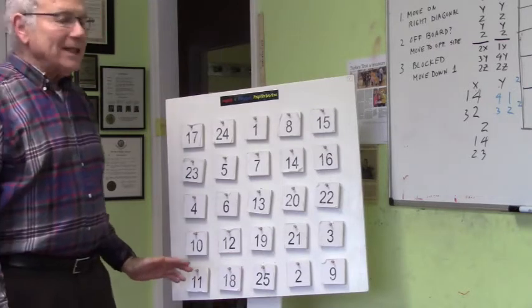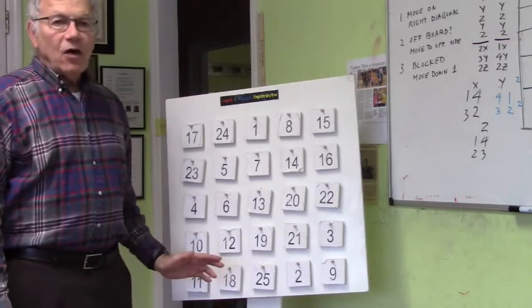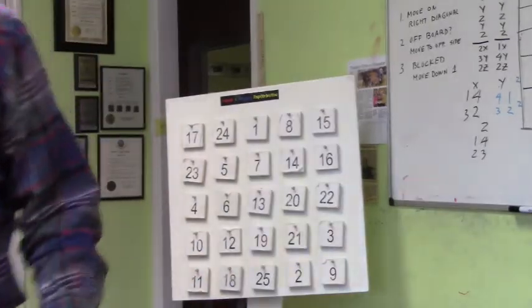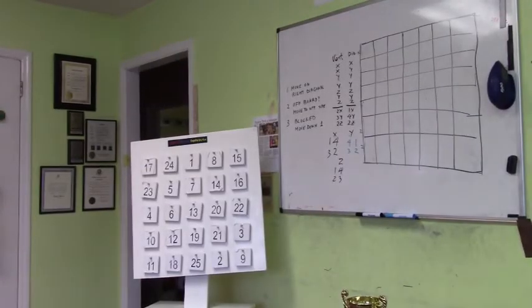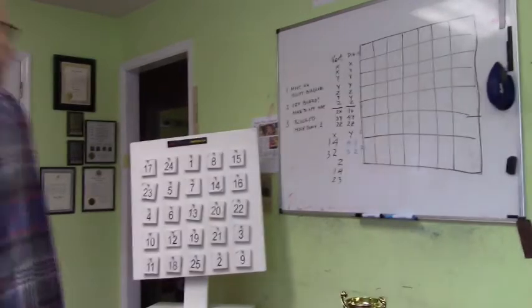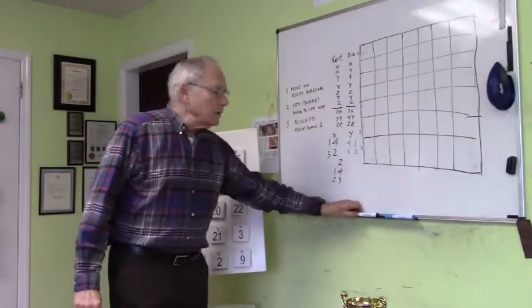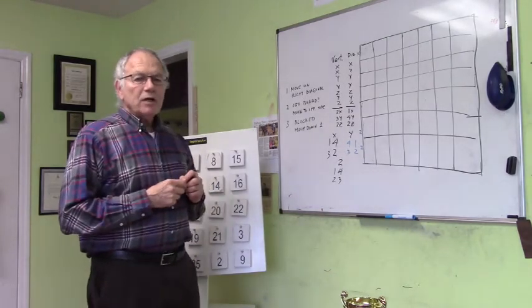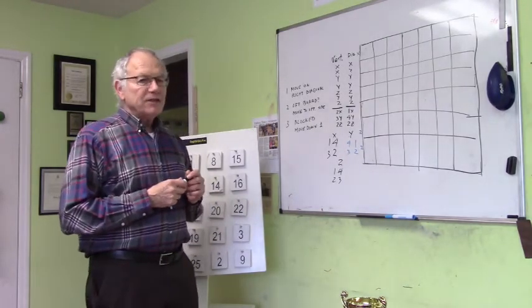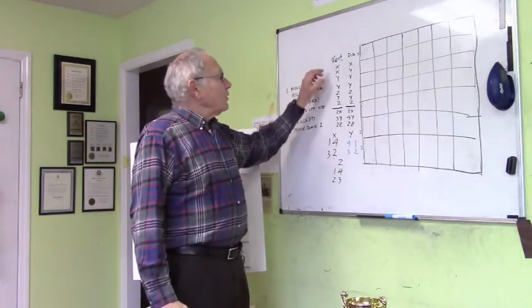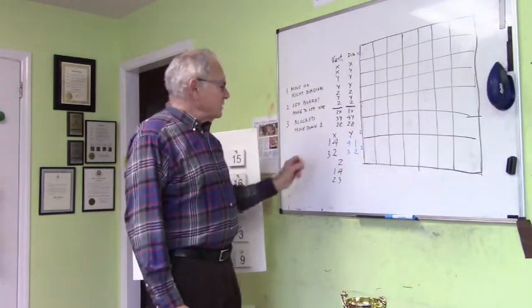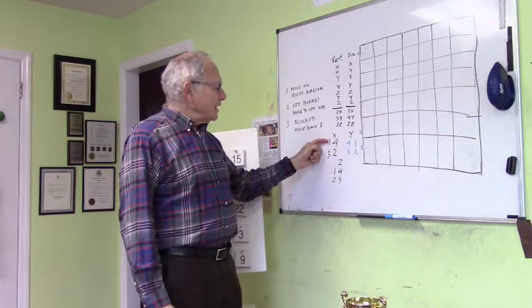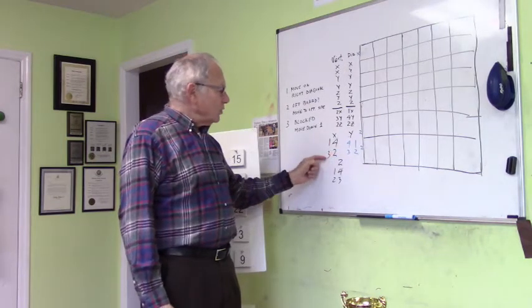Now we're going to take this knowledge and try to solve a 14 by 14 magic square. For the 14 by 14 magic square we're going to develop another set of basic fundamentals. We're going to develop what we call X, Y, and Z patterns. The X pattern is when we place 4 numbers such that we're placing them in an X: 1, 2, 3, 4.